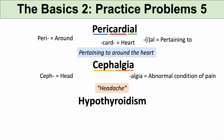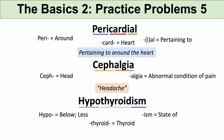The next practice problem is hypothyroidism. The prefix hypo means below or less. Thyroid means thyroid. And the suffix ism means state of. So hypothyroidism means a state of low thyroid functioning.